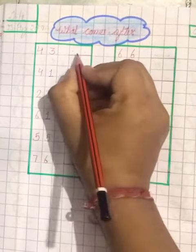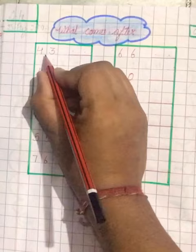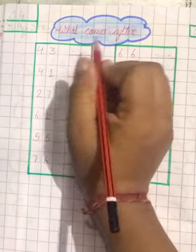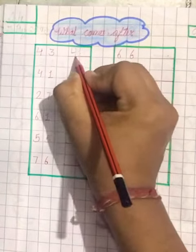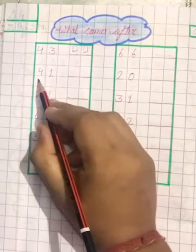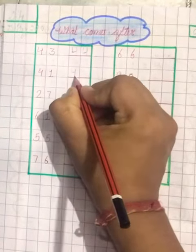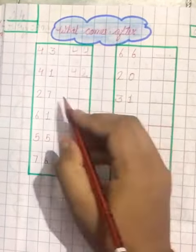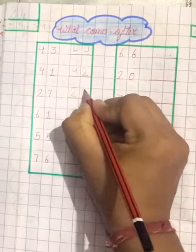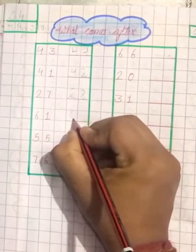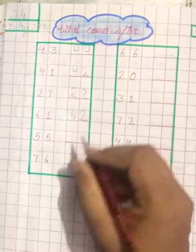Write what comes after. What is this? This is 43, so what comes? 43, 44. This is 41, so what comes? 41, 42. This is 27, what comes? 27, 28. This is 61, so what comes? 61, 62.